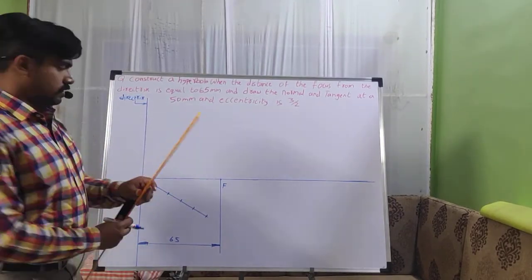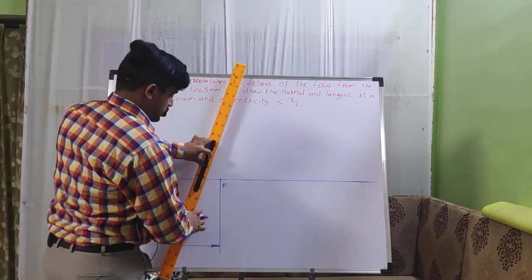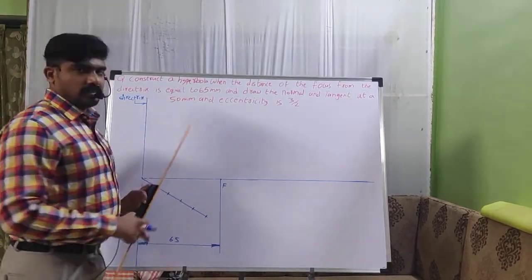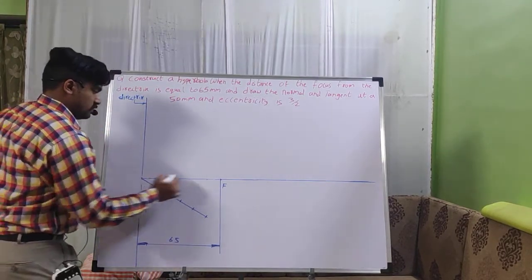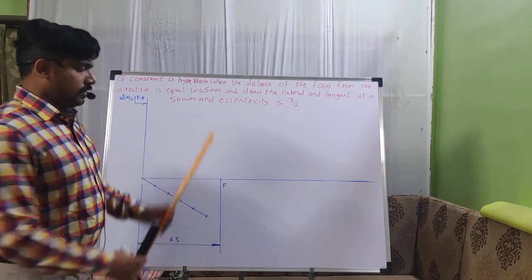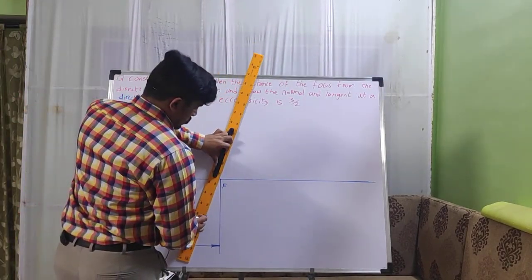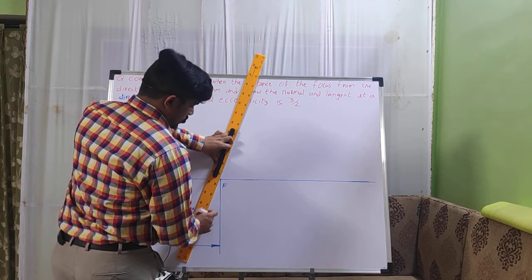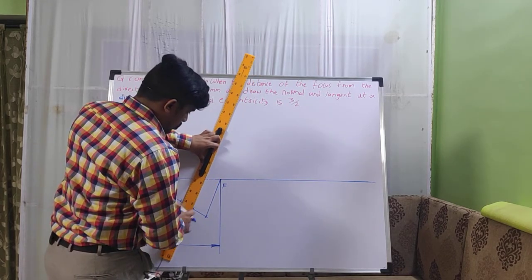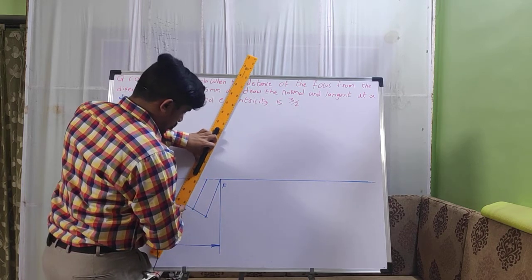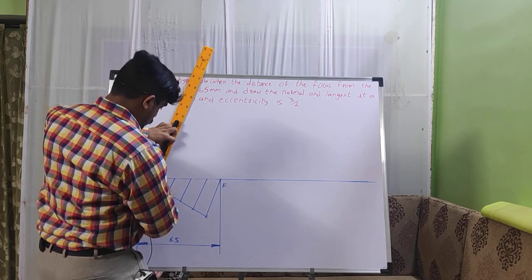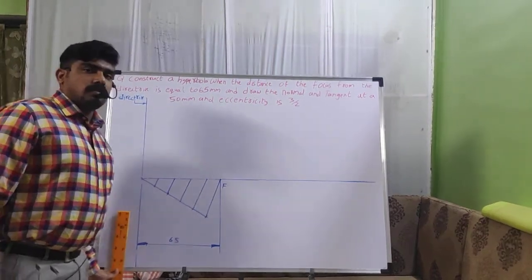With the help of the drafter, you need to join the focus point F and the last division point. Many students won't join this — but you must, because you are dividing this distance into 5 equal parts and need to divide the line accordingly. Take out the drafter, place it at point F and the last point, and join them. Fix the drafter tightly and draw the remaining divisions. We have now divided this into 5 equal parts.